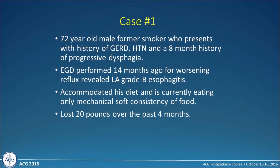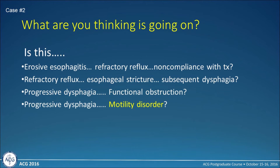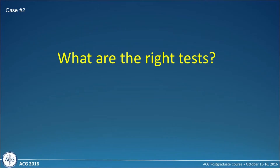Case one: a 72-year-old male, former smoker, with a history of GERD, hypertension, and an eight-month history of progressive dysphagia. An upper endoscopy 14 months ago revealed LA grade B esophagitis. He's accommodated his diet to mechanical soft consistency and lost 20 pounds over the past four months. What's going on? Is this erosive esophagitis with refractory reflux, a stricture causing dysphagia, a functional obstruction, or a motility disorder that hasn't been diagnosed?